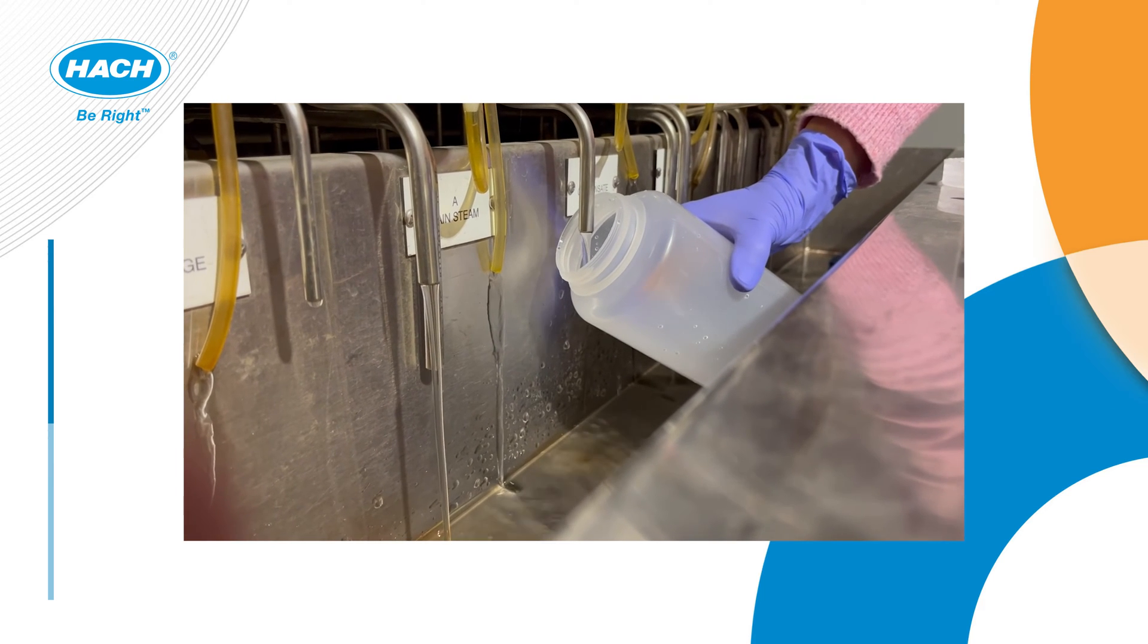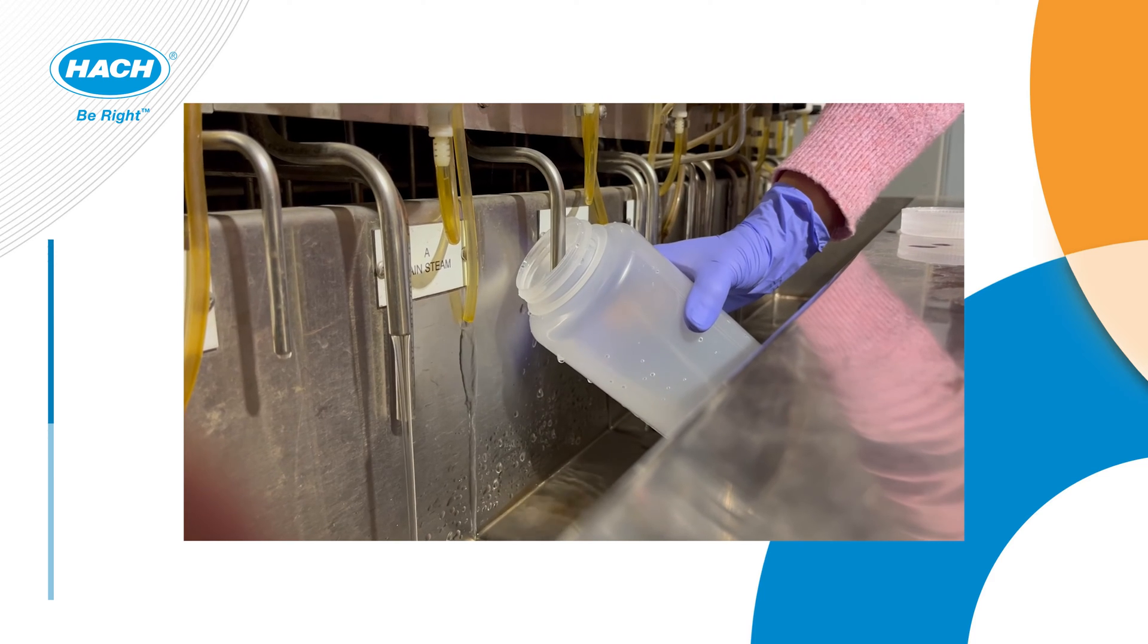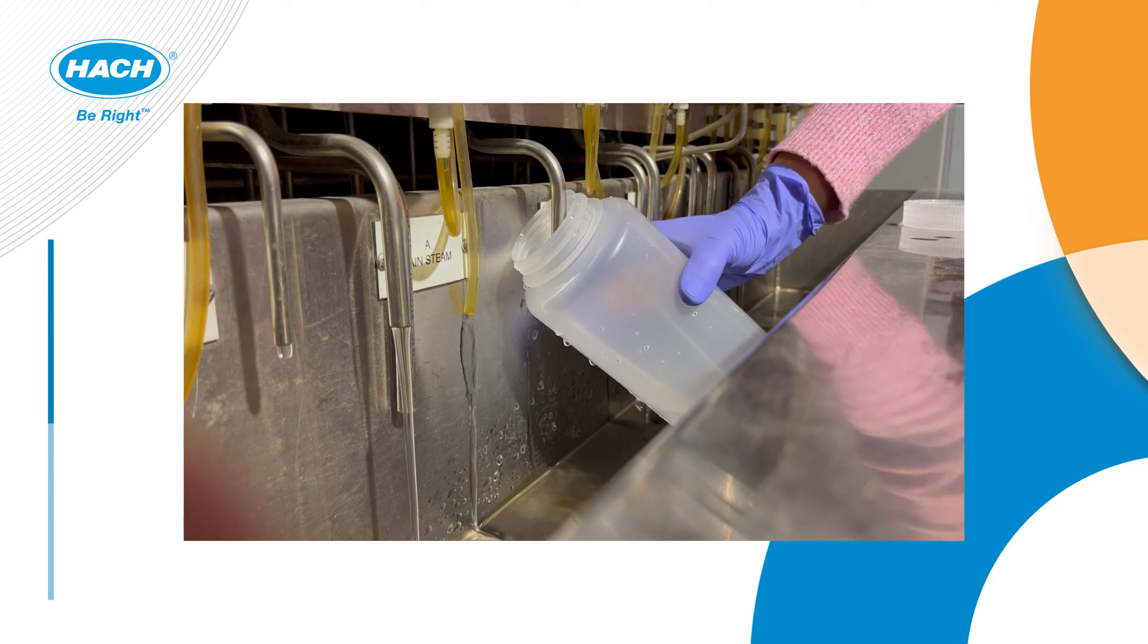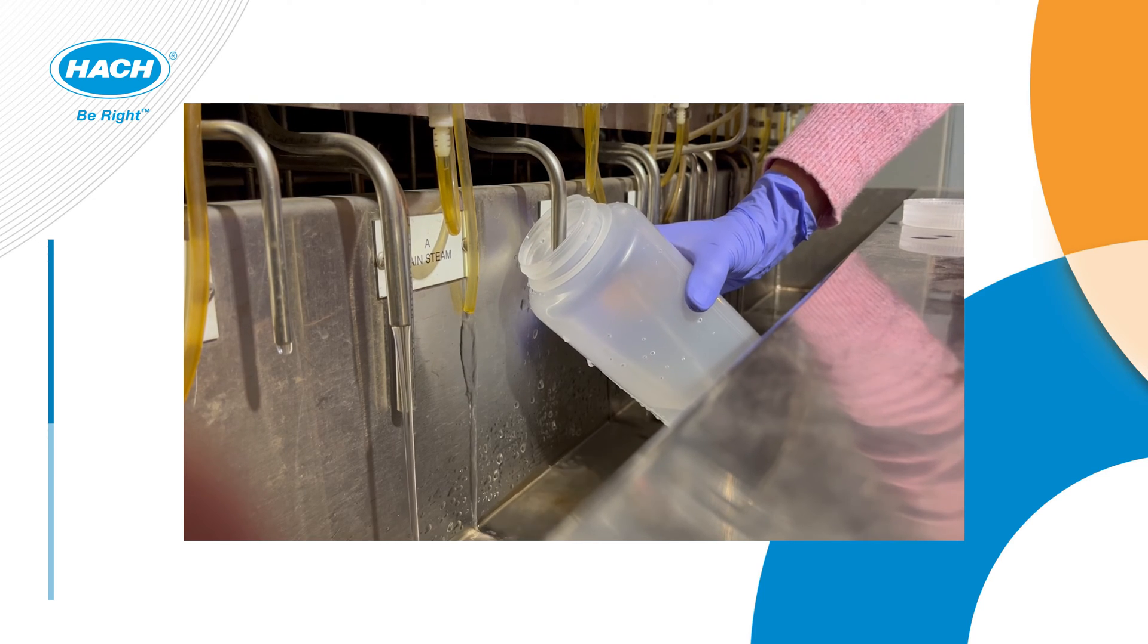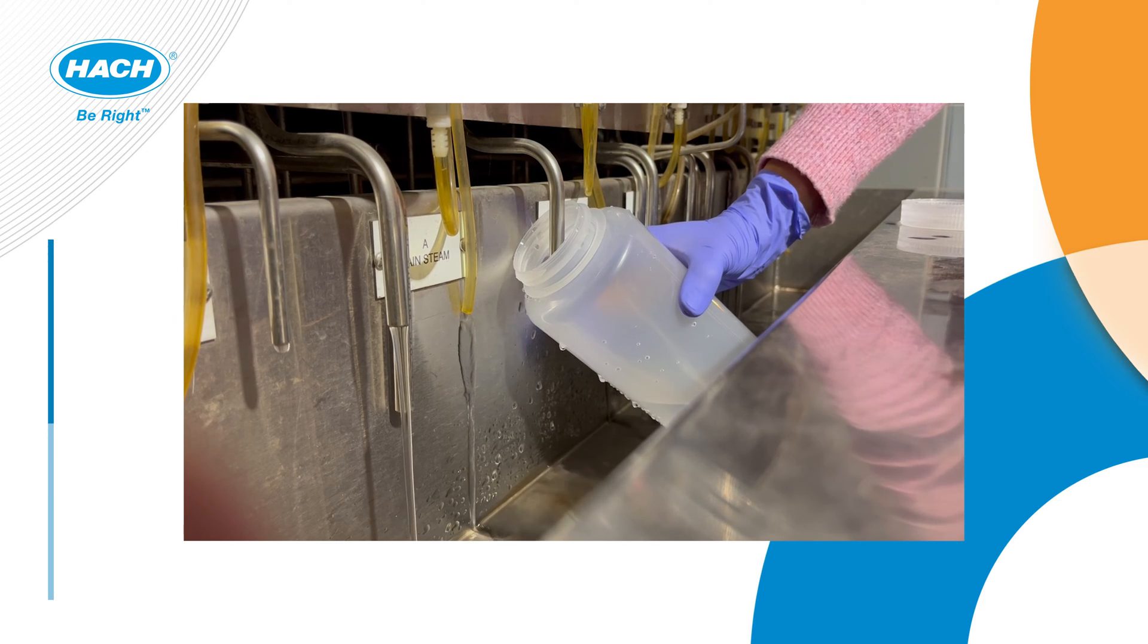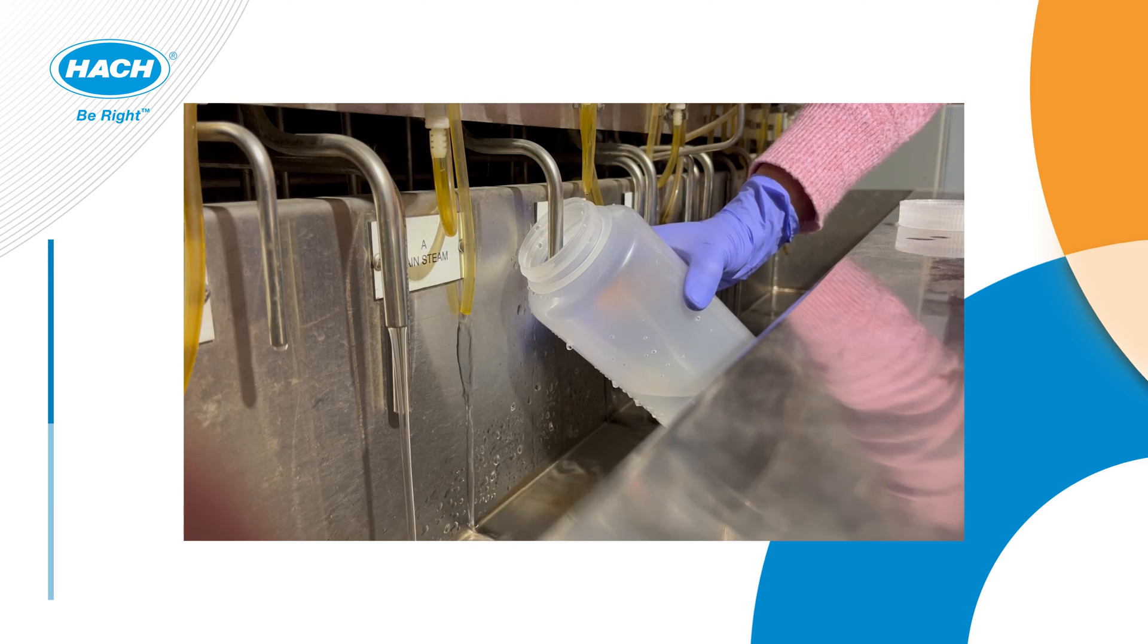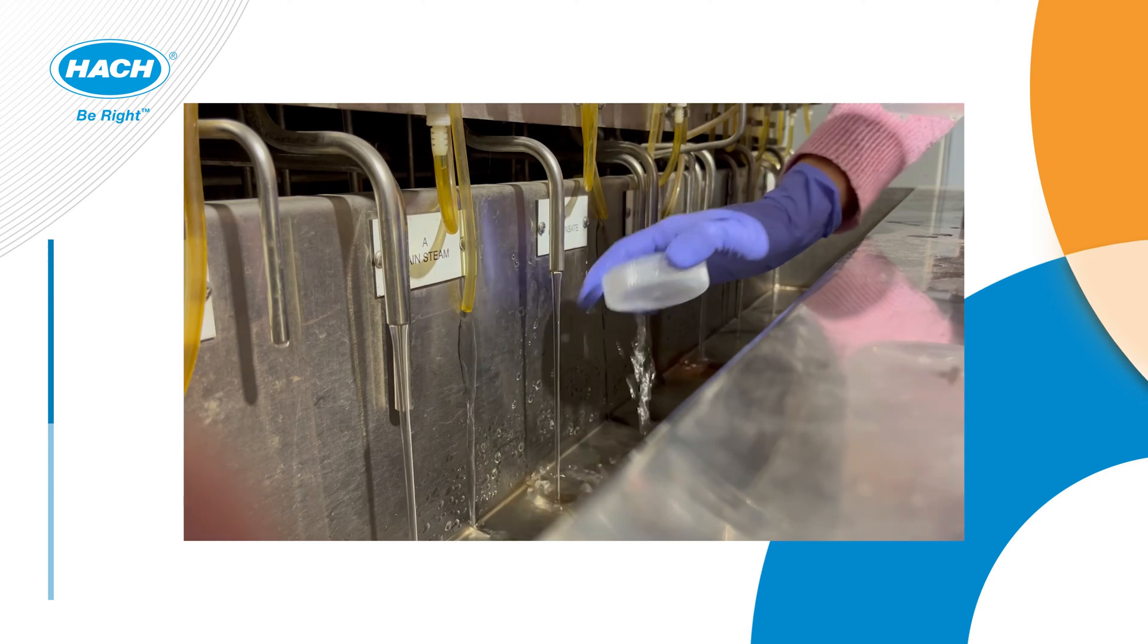In situations where you're not able to actually use the sample cell and need to collect a larger sample, it's very important that you consider the sample container as well as making sure it's rinsed. Use only polypropylene, polyethylene, or PTFE bottles. Do not use glass containers for obtaining this sample. The bottle and its cap must be thoroughly rinsed at least four times with sample prior to collecting.